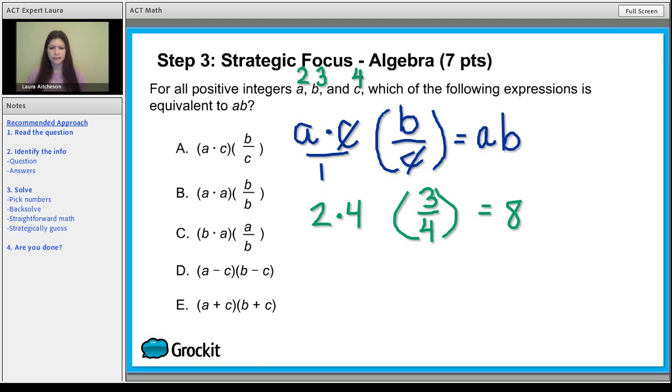But wait a second. 6. What does that have to do with anything? Well what were they asking for? They were asking for a times b. According to the numbers we picked, a is 2, b is 3, so a times b is 6. So whether you're solving with straightforward algebra or you wanted to pick numbers, you're going to get your points on that question.